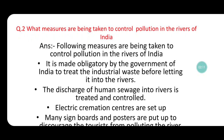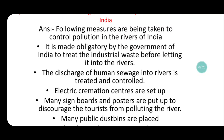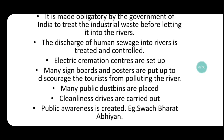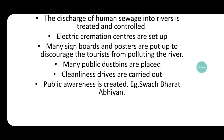The second question is: what measures are being taken to control pollution in the rivers of India? The following measures are being taken: it is made obligatory by the government of India to treat industrial waste before letting it into the rivers. The discharge of human sewage into rivers is treated and controlled. Electric cremation centers are set up. Many signboards and posters are put up to discourage tourists from polluting the river. Many public dustbins are placed.